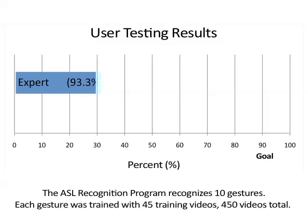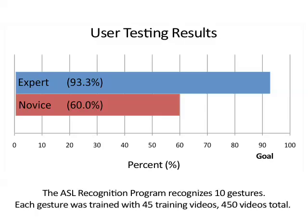Two groups were used to evaluate the accuracy of the system: the first being expert users familiar with American Sign Language, and the second group, novice users, were unfamiliar with American Sign Language. As you can see, the results of the testing gave a 93.3% recognition rate for expert users and a 60% recognition rate for novice users. We believe that with further training of the HMM, we could increase the recognition rate of both the expert and novice users.